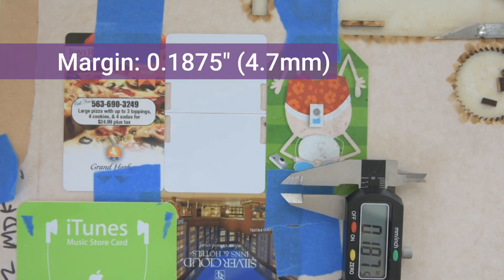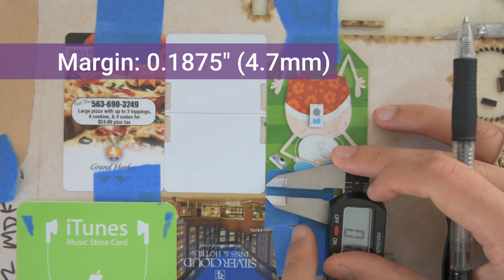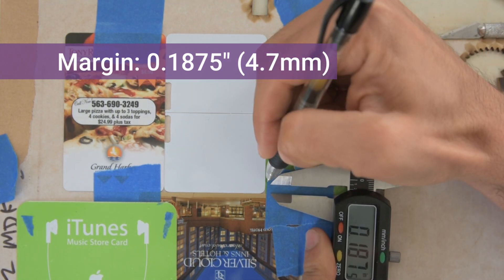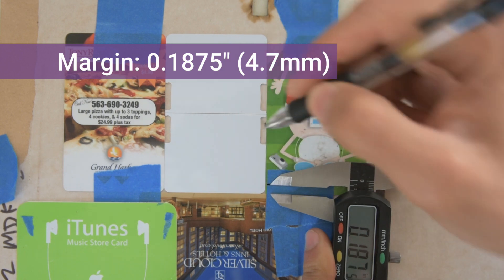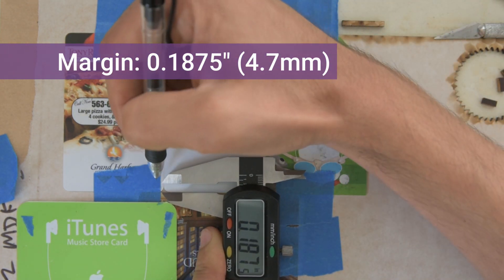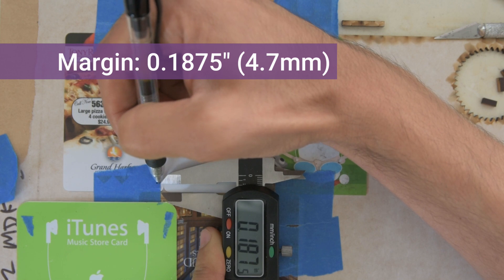And so what we're going to do here is just line this up with the bottom there. We're going to just make a little mark on the tape on this side. And then same thing over here, align it, make a mark on the tape.